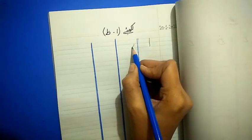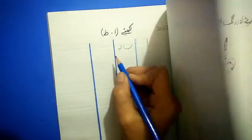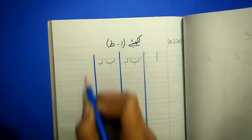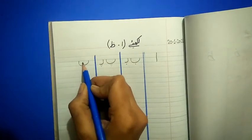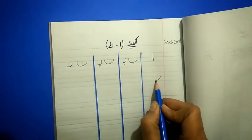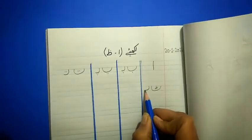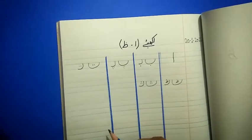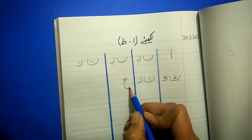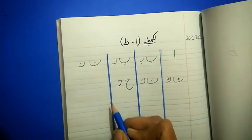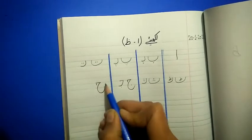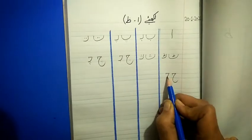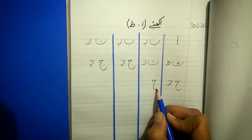Alif ke baad ki aata hai Be. Be ke niche eek nukta. Be ke niche tien nukta. Be ke baad ki aata hai Te. Te ke oopar do nukta. Te ke oopar choti toain. Se. Se ke oopar tien nukta. Tien nukta urfe jim awaaz hai. Urfe che.